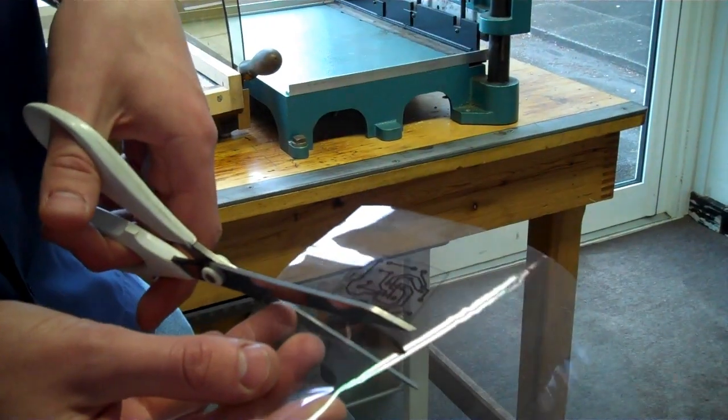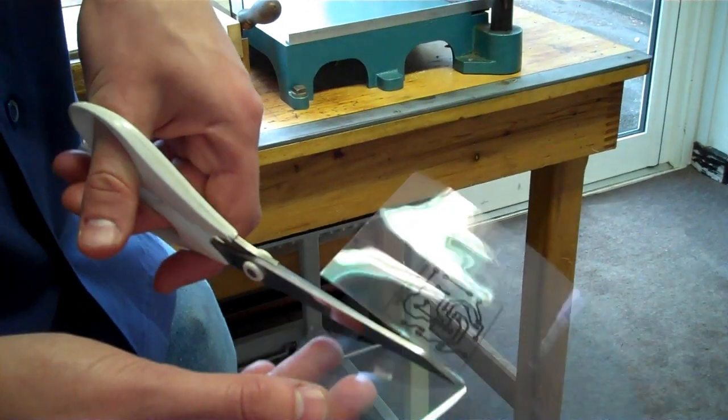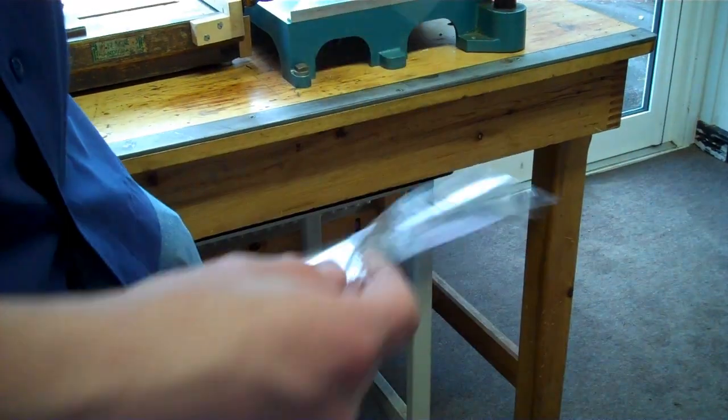So now I'm just cutting the acetate out, leave it about 5mm around each edge.